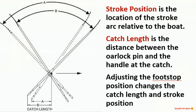Stroke position is the location of the stroke arc relative to the boat. It is often measured in degrees of oar catch angle, finish angle, and total arc. This graphic shows how the dimension of catch length controls the stroke position, and coaches often use marks or straws on the gunnels and have athletes move their foot stops accordingly to set the oar catch angle.